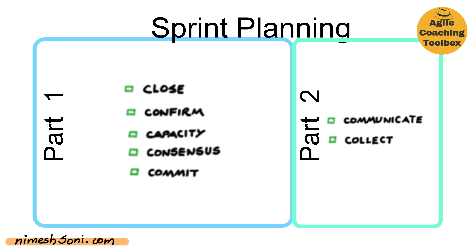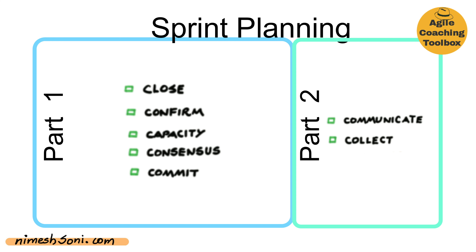In part two, there are two activities that the Scrum Master can complete. The next two C's are more for the Scrum Master than the entire team. So when part one is done, the team can go back to their desk and start working on their stories. You don't need the entire team to be present while the Scrum Master is doing these activities.